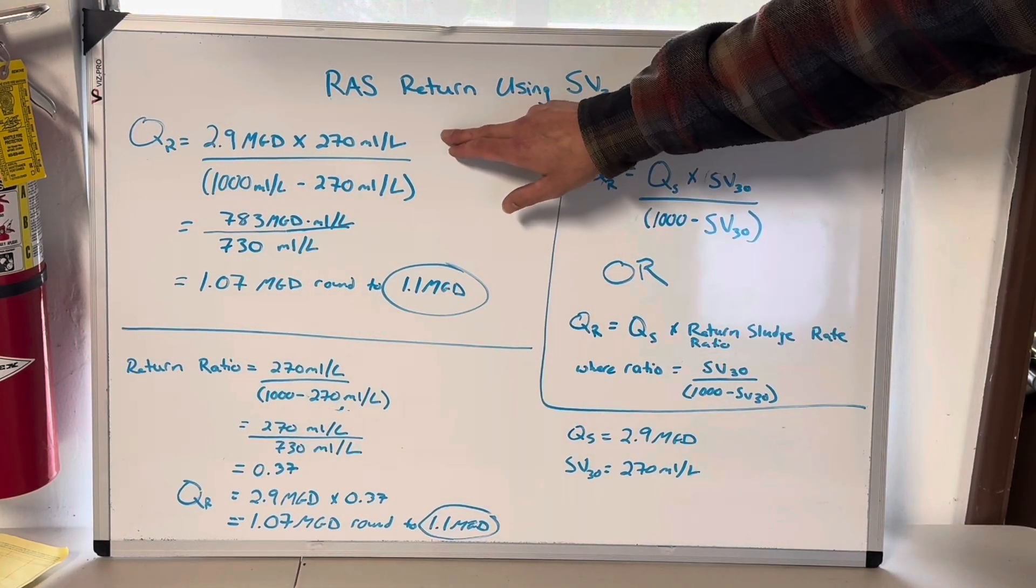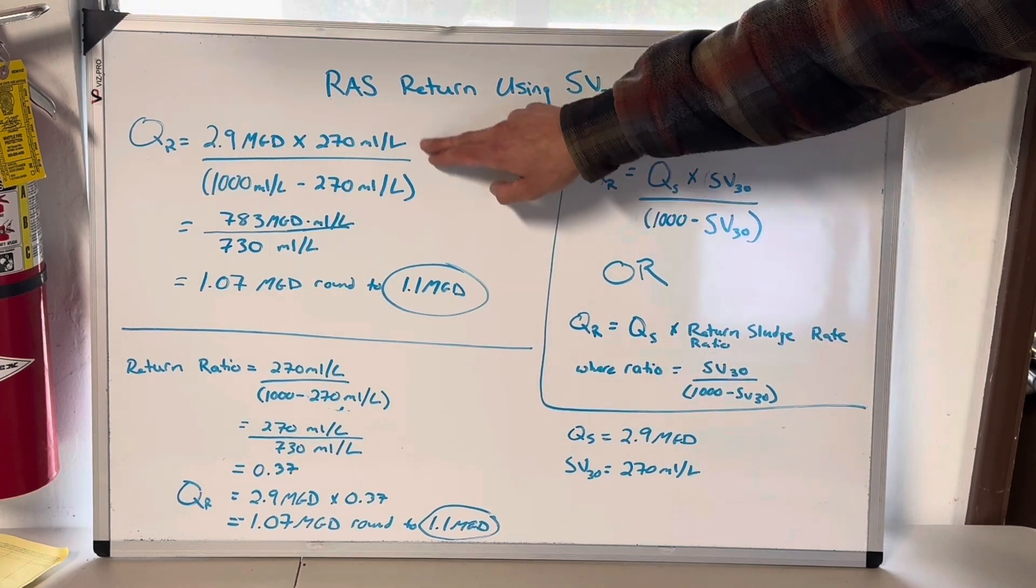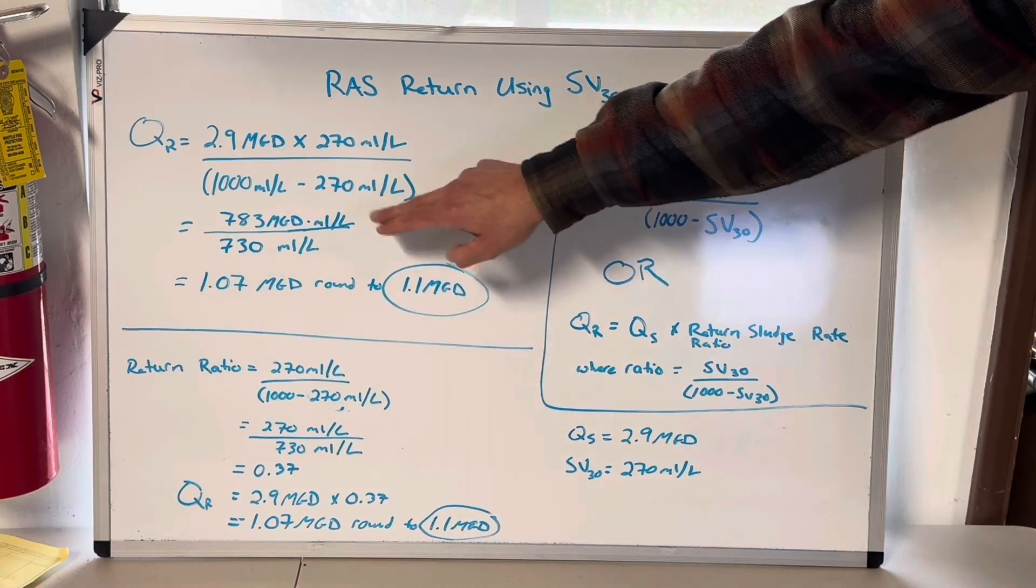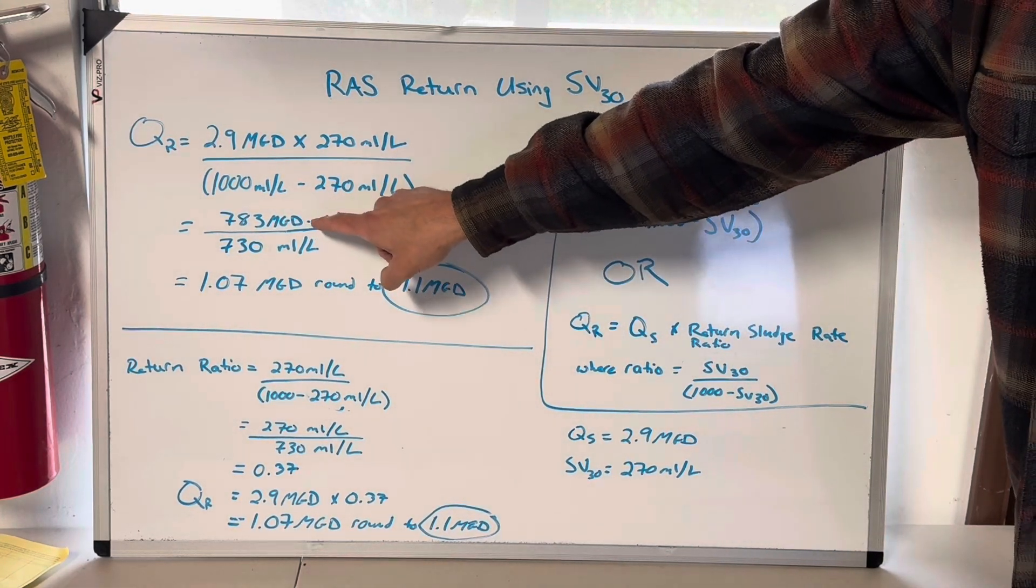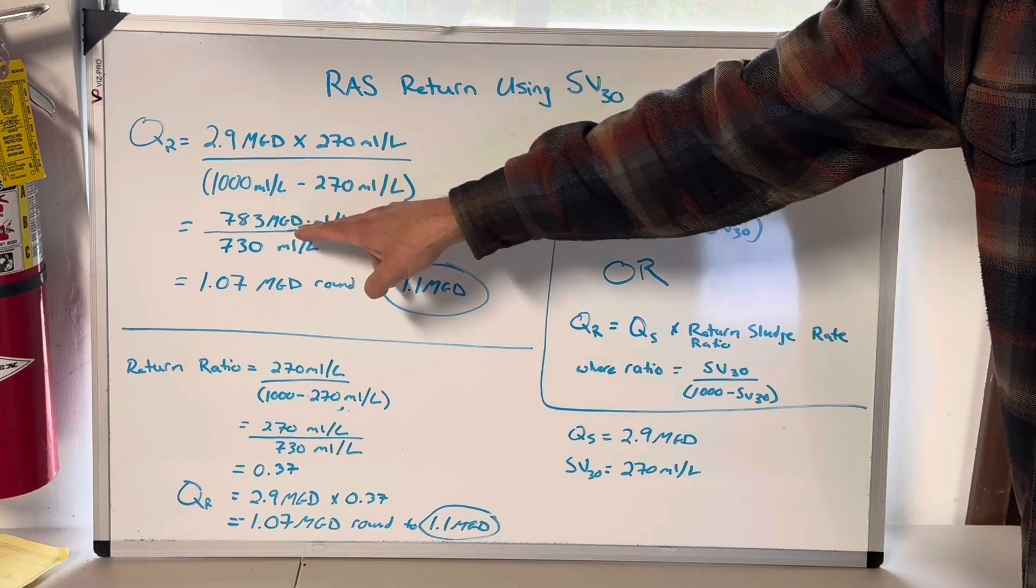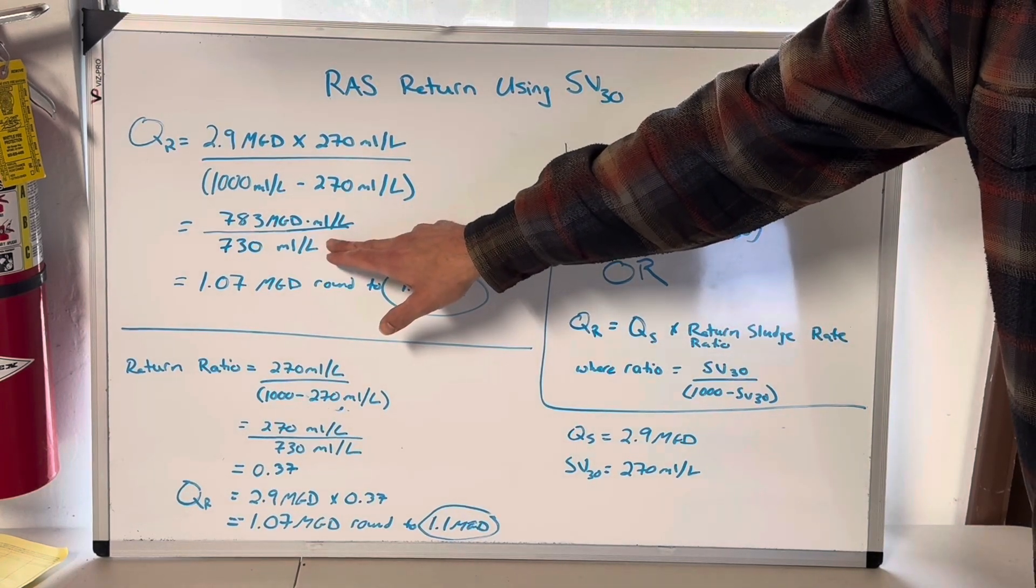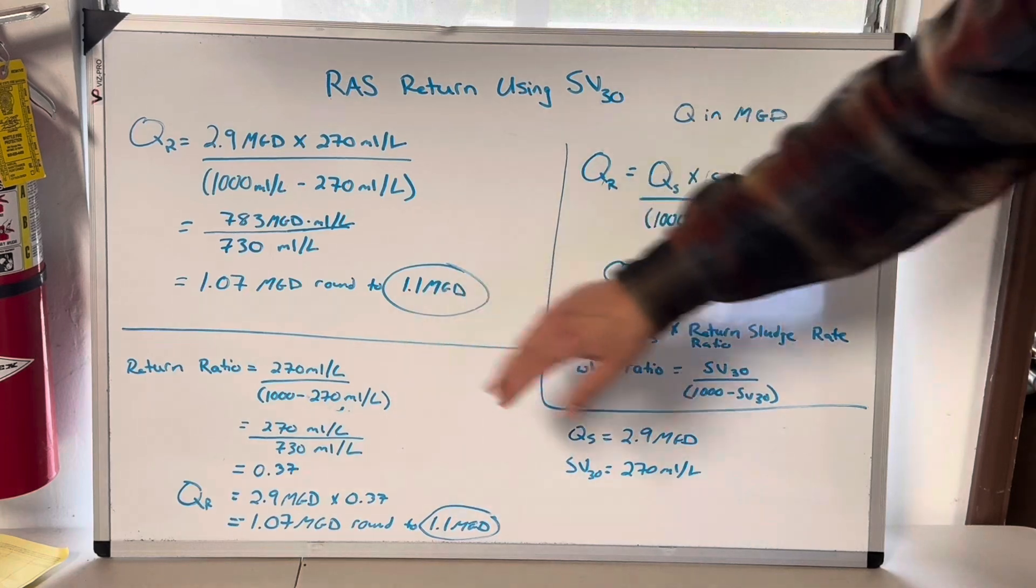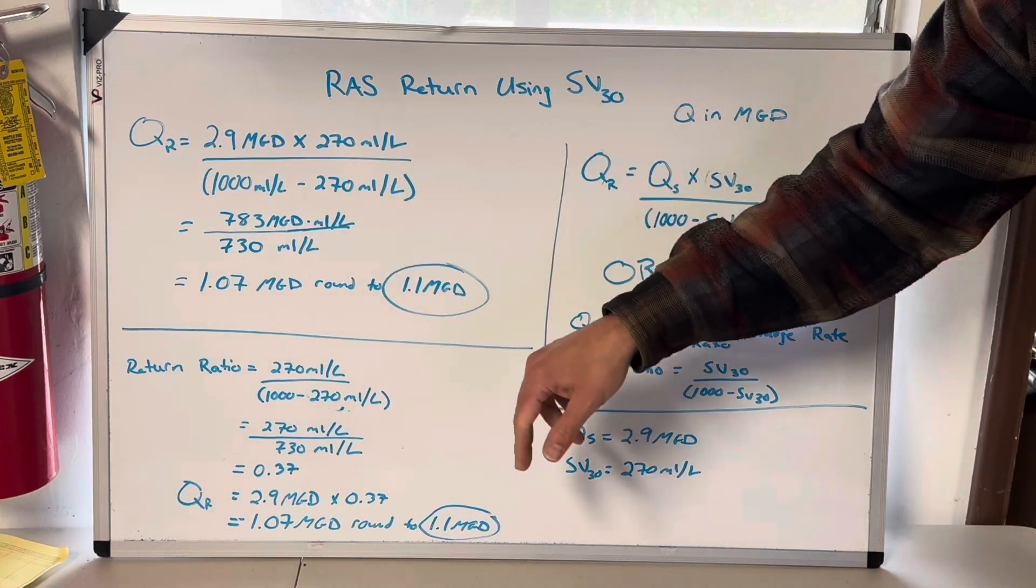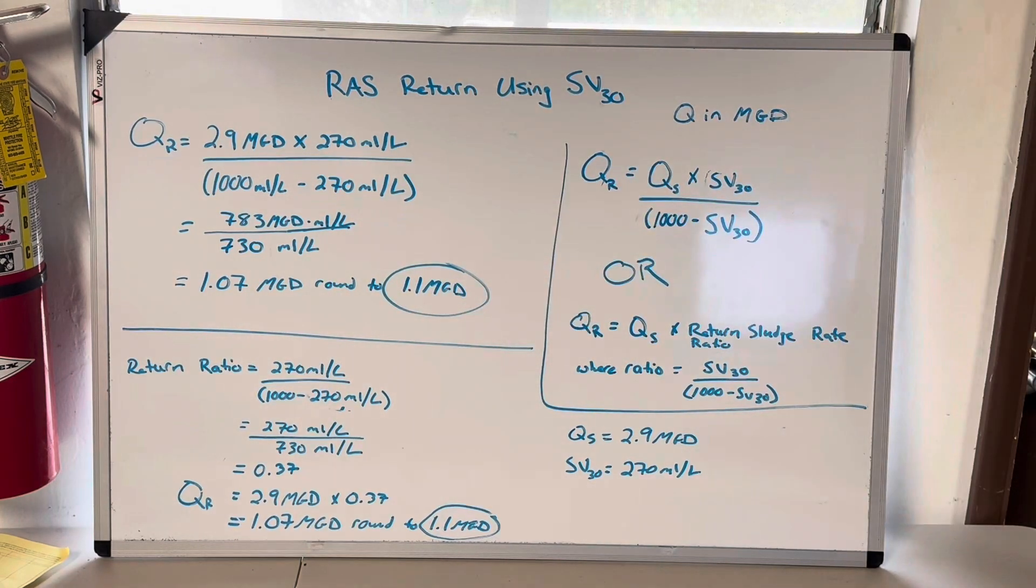2.9 MGD times 270 milliliters per liter divided by 1000 milliliters per liter minus 270 milliliters per liter. So 2.9 times 270 is 783 and 1000 minus 270 is 730. Now, this is where it gets a little sticky because I multiply these together and those units don't combine. I've got 783 MGD by milliliters per liter. Divided by 730 milliliters per liter. And then we can cancel these units out. That's why the ratio is actually a little easier and we'll get there in a second. You'll see how I can get the milliliters per liter out of the equation before I introduce it to MGD. And then when you do that division problem, it's 1.07 MGD and you round to 1.1 MGD. This was one of the four answers that was in the study guide.